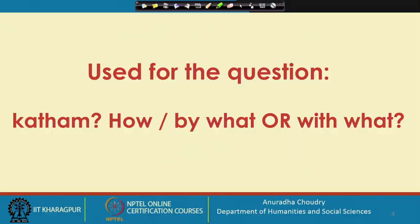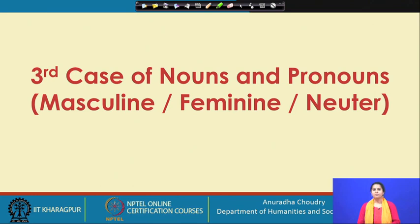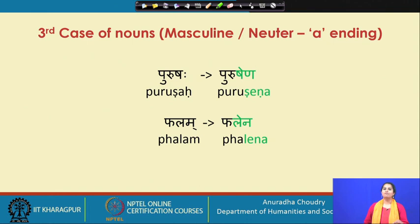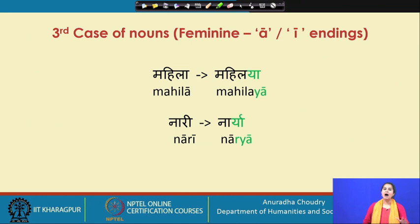Looking at the third case of nouns and pronouns: purushaha becomes purushena, phallam becomes phallena. For feminines: mahila becomes mahilaya, nari becomes narya. For the first person, aham is maya — 'with me.' Maya gachati, Pyushaha; maya sanskritam pathati — with me. Then thwaya means 'with you.' Thwaya kim karoti? Thwaya griham gachati. With bhavan, the respect form becomes bhavata — aham bhavata karyam karomi, meaning 'I am working with you' (masculine respect form). And with the lady: aham bhavatyaa karyam karomi.